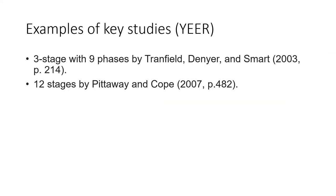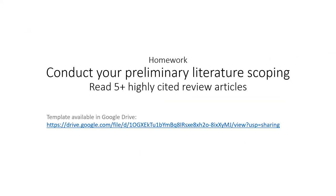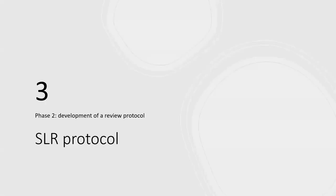Your second homework should be to conduct preliminary literature scoping using Google Scholar as introduced — or use a better method and share it with the group. You should read at least five highly-cited review articles in the next two weeks, summarize the research gaps, and compare with your own proposal to see your position in the research community. Templates are available in Google Drive for you to download and modify for your own research.